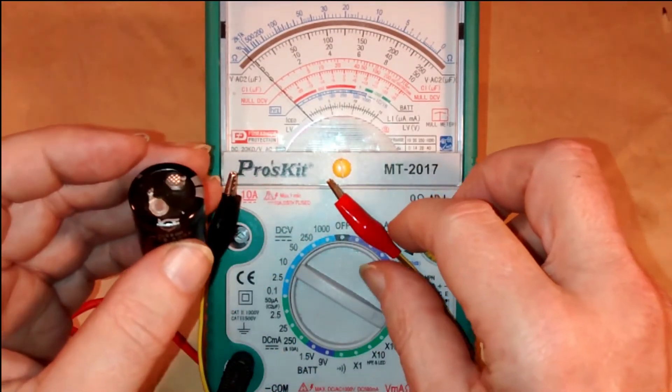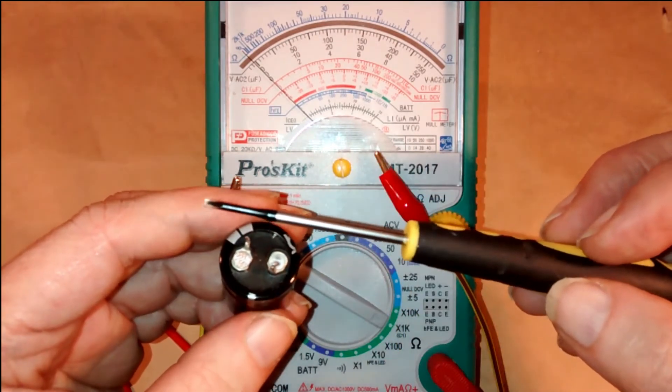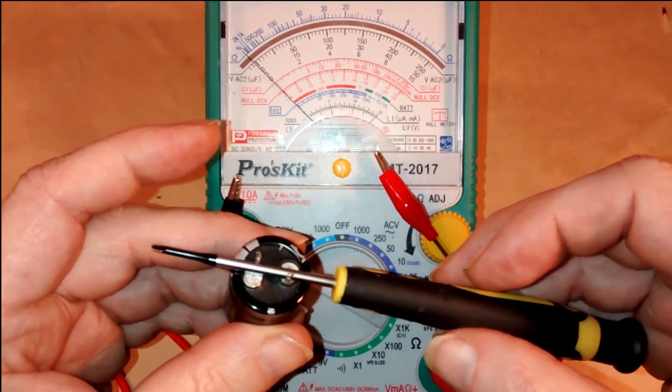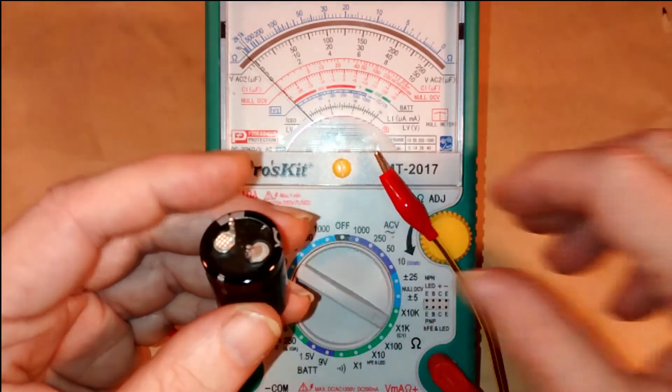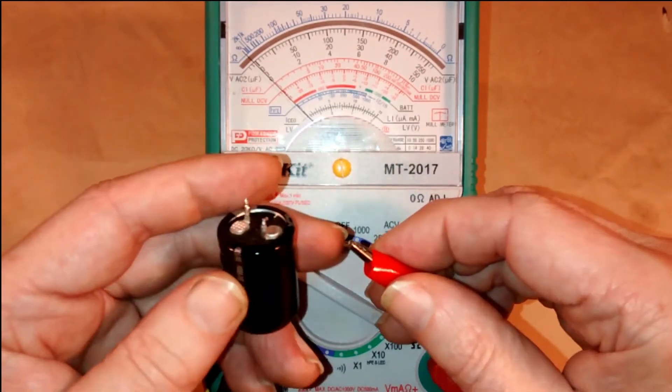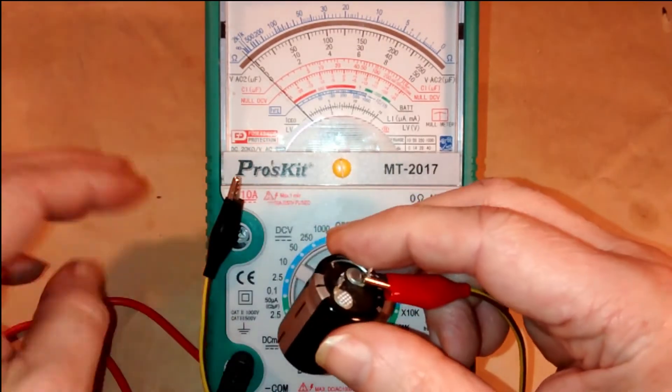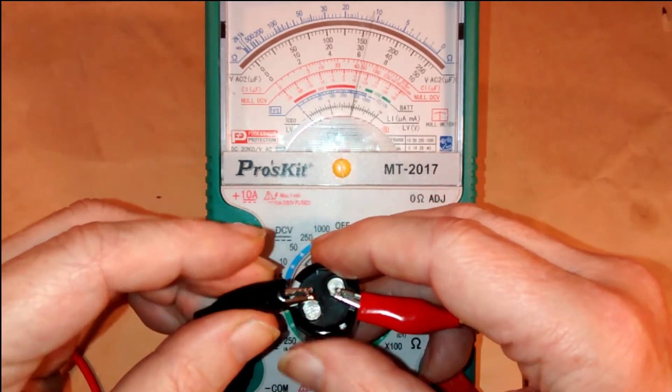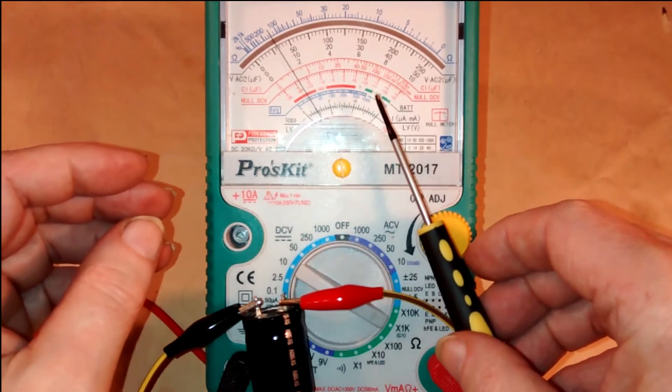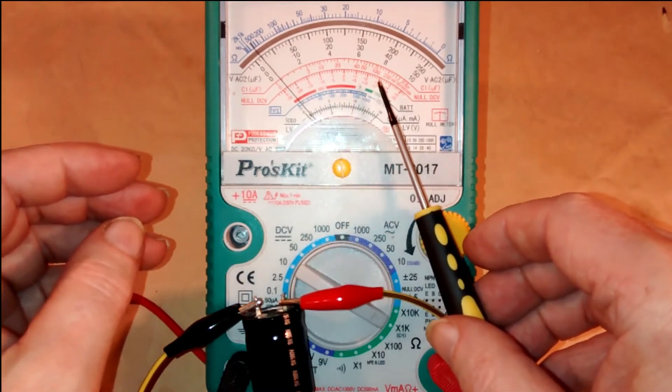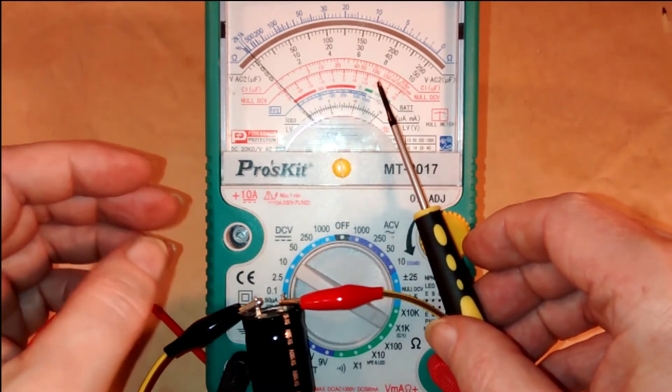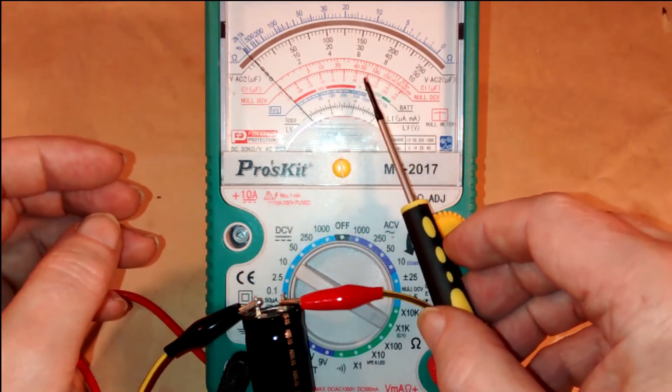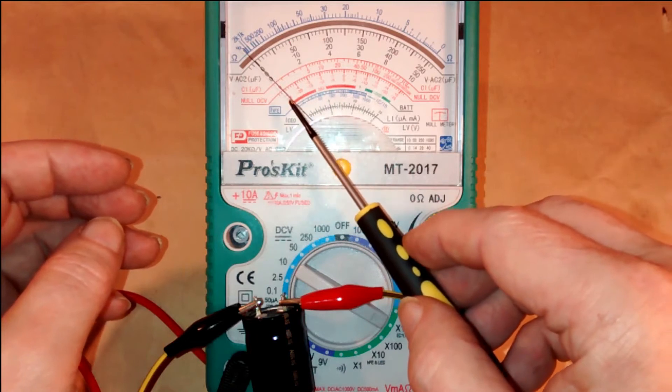Now this is a good capacitor. Before you check the capacitor you should always make sure it's discharged by shorting out the terminals. Connect the positive to the positive side, negative to the negative side, and the needle will flick across quickly to roughly the capacity of the capacitor.